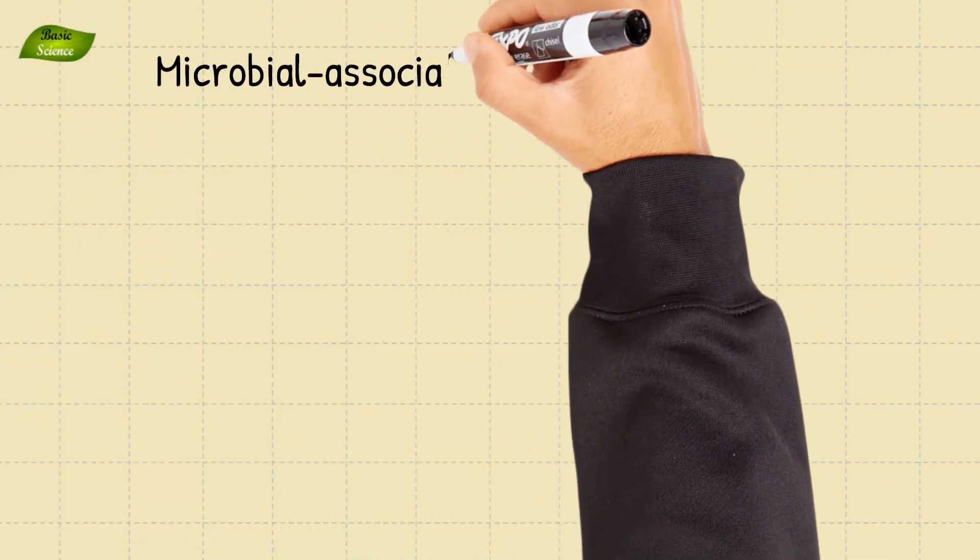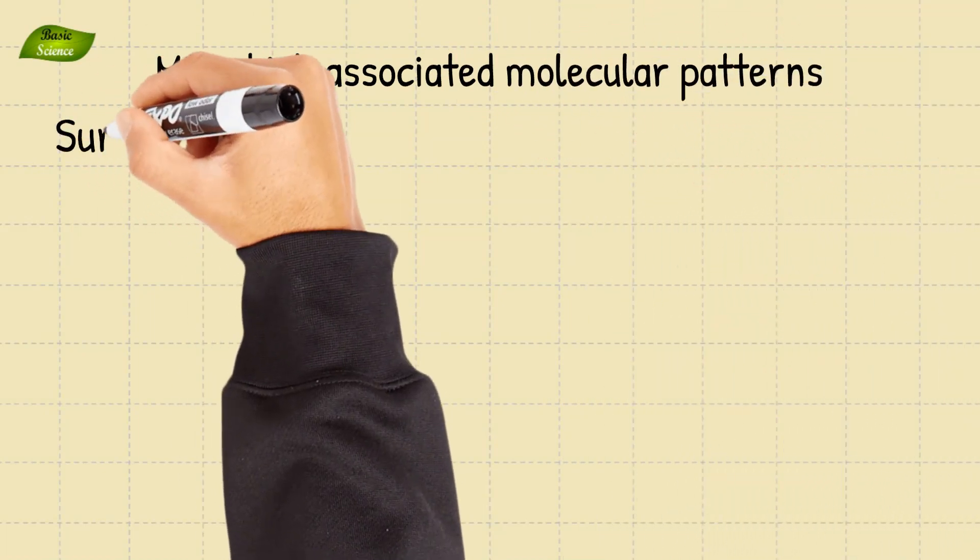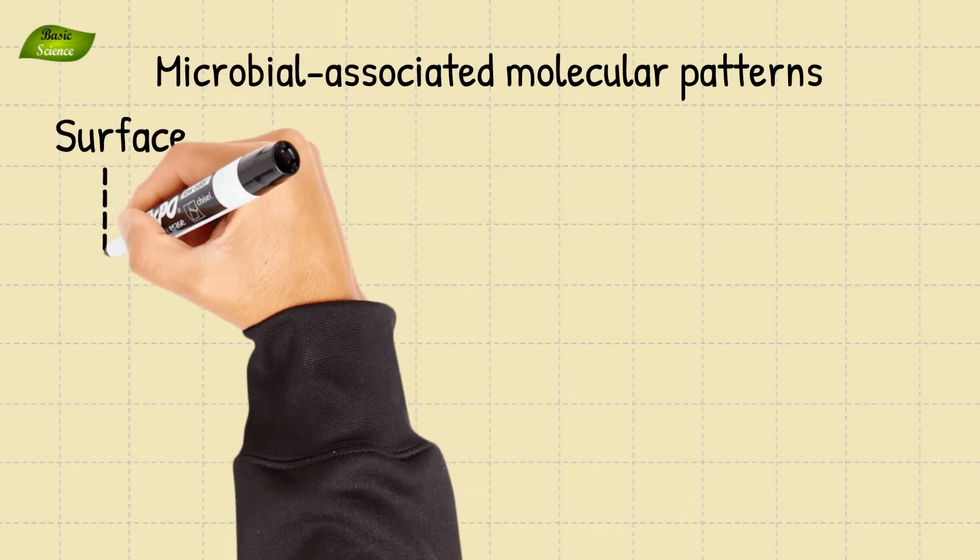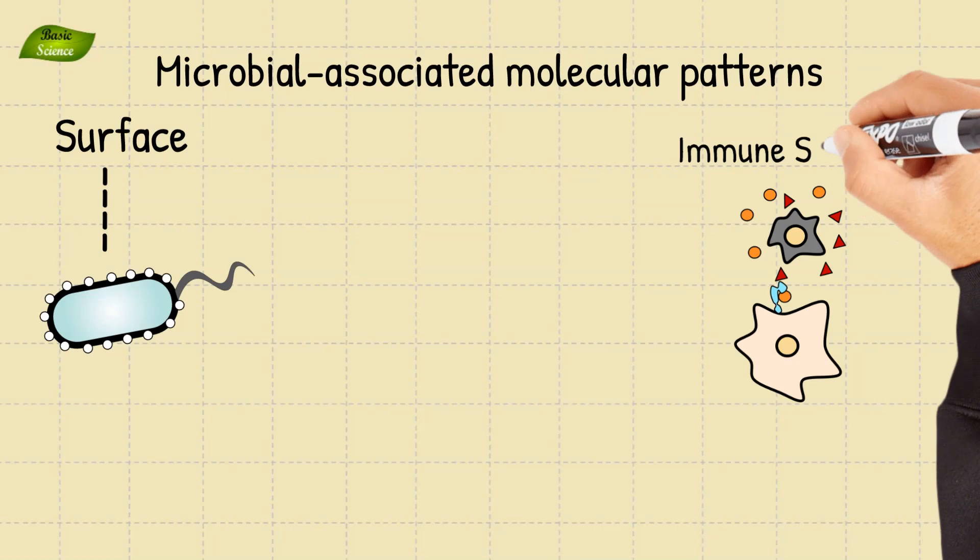Microbial patterns, also known as Microbial-Associated Molecular Patterns, are molecules found on the surface of microorganisms that are recognized by the host immune system.